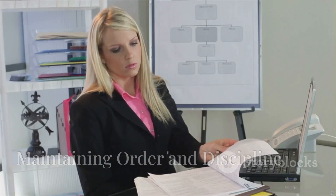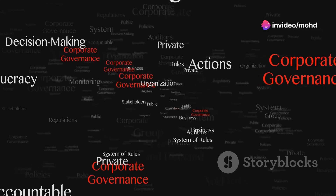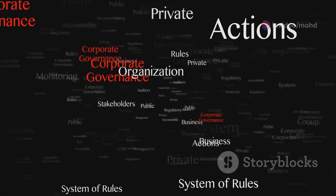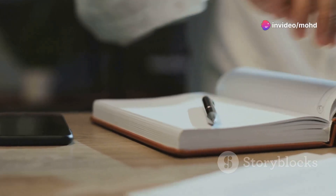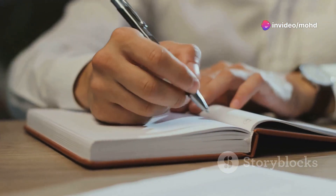First, let's talk about maintaining order and discipline. Disciplinary procedures set clear expectations for behavior within an organization. They ensure that everyone knows the boundaries and standards they need to adhere to. By addressing misconduct promptly and consistently, these procedures help deter future violations. This promotes a culture of accountability and helps maintain a well-ordered workplace.